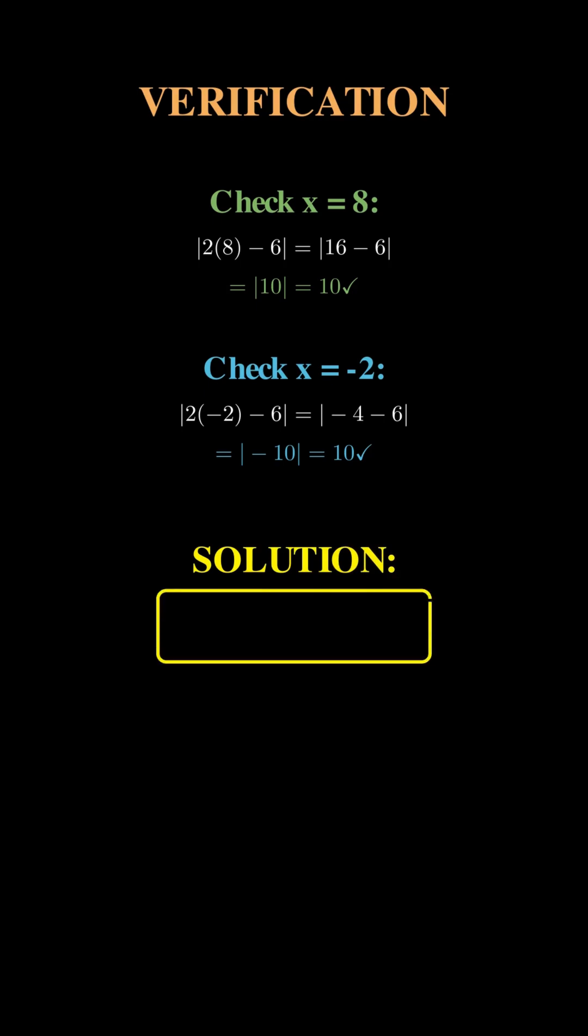Let's verify. For x equals 8: The absolute value of 2 times 8 minus 6 equals the absolute value of 16 minus 6 equals the absolute value of 10 equals 10. Check. For x equals negative 2: The absolute value of 2 times negative 2 minus 6 equals the absolute value of negative 4 minus 6 equals the absolute value of negative 10 equals 10. Perfect.